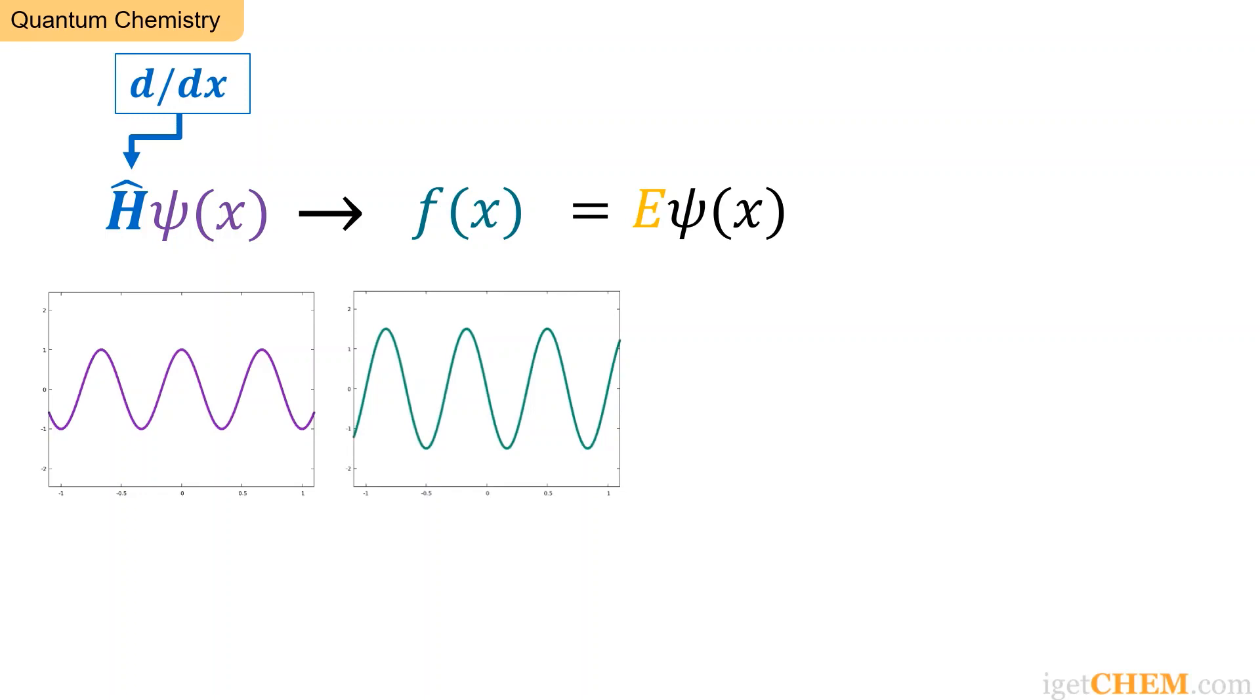In this example, psi of x is a cosine function. So f of x is a sine. Even though psi and f are both periodic, the purple psi of x lags the green f of x by a quarter of the period. So you see there's no way to multiply psi by just a number and make it come out equal to f.